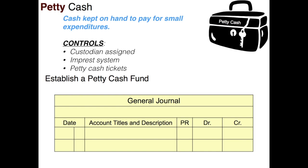Also in the petty cash fund, when money is paid out from cash, there should be a ticket in that pouch or box or wherever the money is kept that signifies money was used to purchase something.